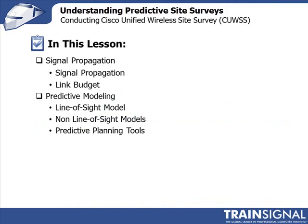Before we can start talking about what the predictive planning tools are, we need to understand some fundamental concepts. We're going to start with talking about how signals propagate over the air — what happens to my signal when it leaves the transmitting antenna and arrives at the receiving antenna. Once we've done that, we're going to talk about a link budget, which is about how to make sure I receive enough signal strength that my receiver can successfully decode that signal and get back to your 1s and 0s.